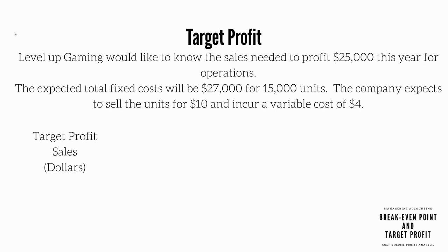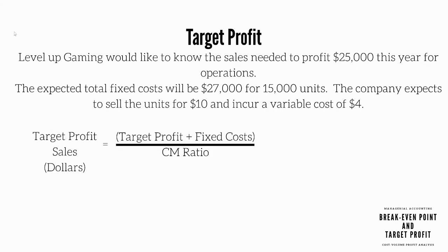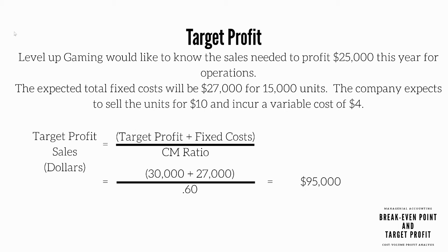Now we can look at the target profit in terms of sales dollars. We'll take target profit plus fixed costs divided by contribution margin ratio. So $30,000 plus $27,000 divided by 0.6. This comes out to $95,000 in sales dollars needed to make the target profit.